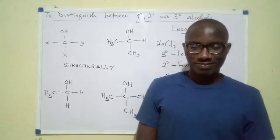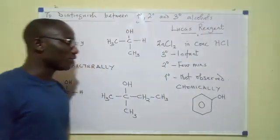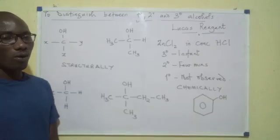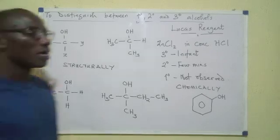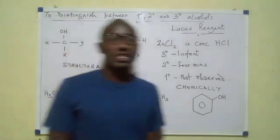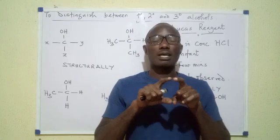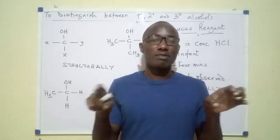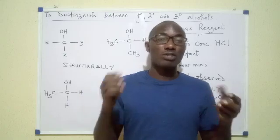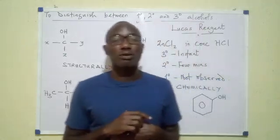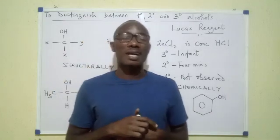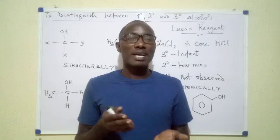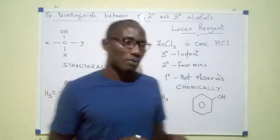Welcome to today's class. In today's video I'll be showing you how to distinguish between primary, secondary, and tertiary alcohols. Alcohols are compounds that have the OH group — the hydroxyl group — attached to an aliphatic chain. Once you have an aliphatic chain with the OH group attached to it, the compound you have is an alkanol, or more broadly, an alcohol.